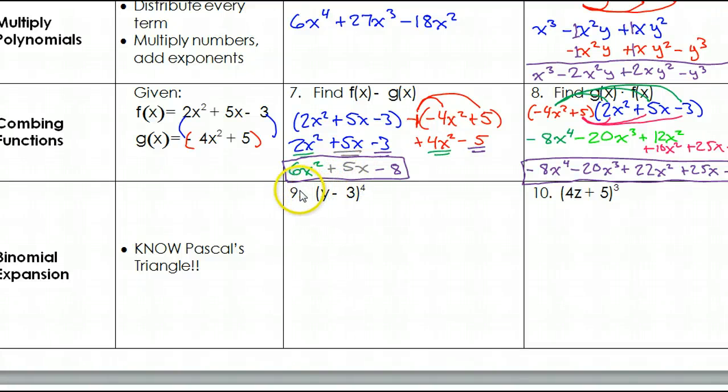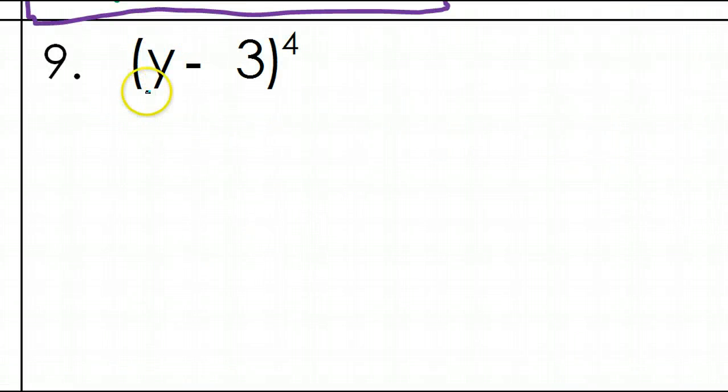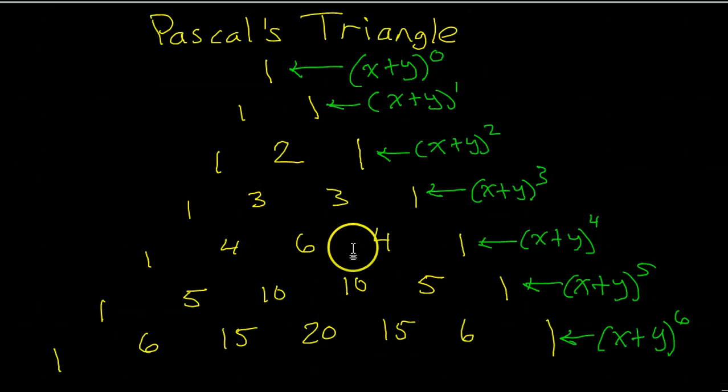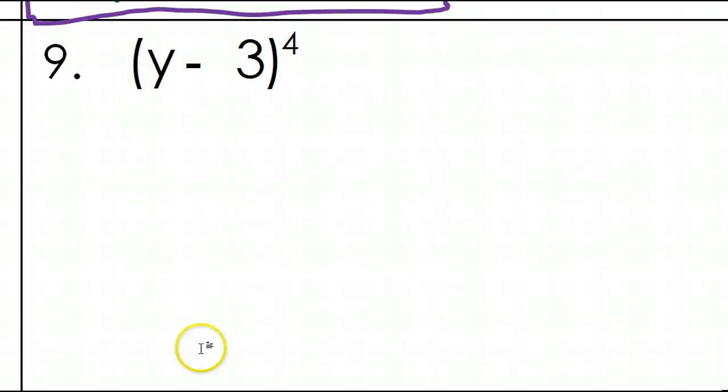So, in order to do a problem like number nine, I'm going to need to zoom in. That's for sure. First, we need to observe the degree, the exponent to which we are raising this binomial of y minus three. The degree is four. So, as we look at our chart here, we find the coefficients on this row when you have degree four. So, the coefficients will be one, four, six, four, one.